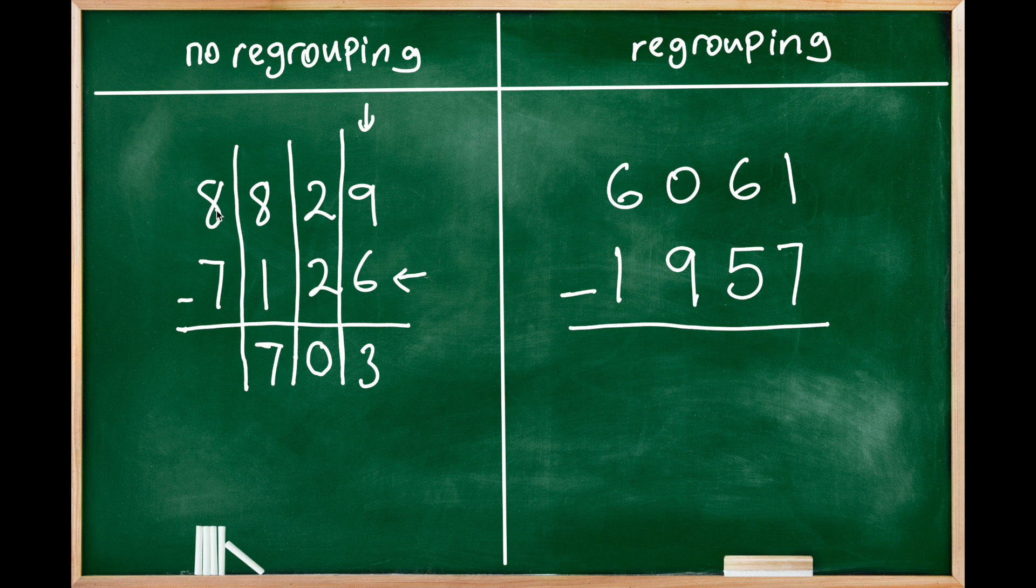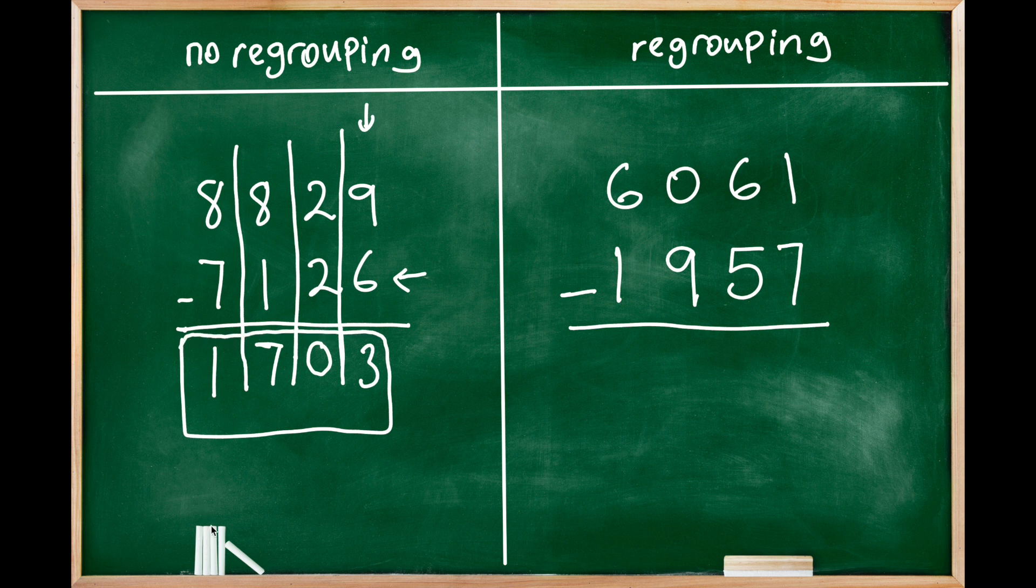In the thousands place, 8 minus 7 is one. So our difference is one thousand seven hundred three. As you see, we didn't do any borrowing, we didn't carry over any numbers from between places.